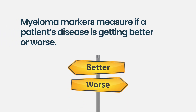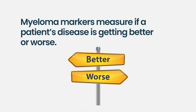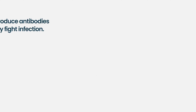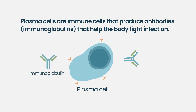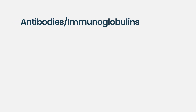When we're measuring how someone's disease is getting better or worse, we use the term myeloma markers. Plasma cells are immune cells — they make antibodies to fight infection, and in myeloma they still make that antibody, but it's kind of messed up so it doesn't work properly. It still has some of the core features: an antibody typically has two parts — the bottom part is heavy, so we call it the heavy chain.